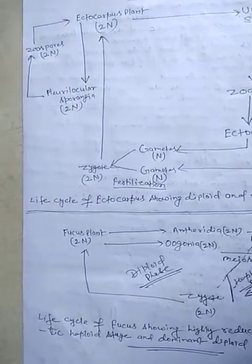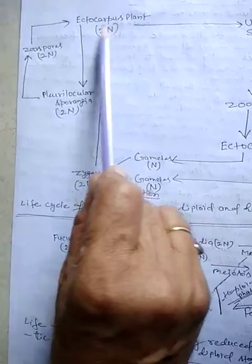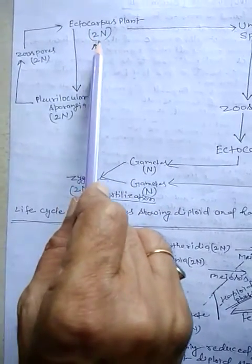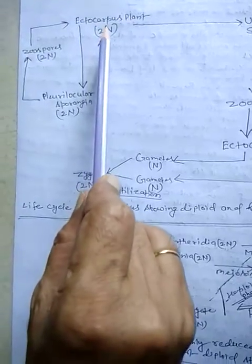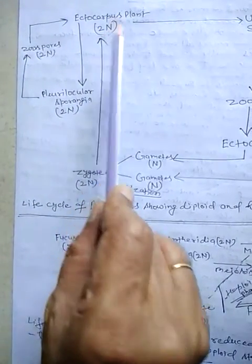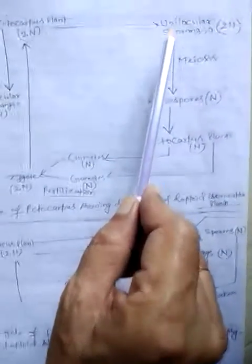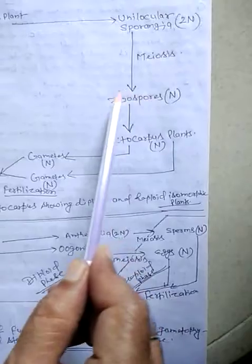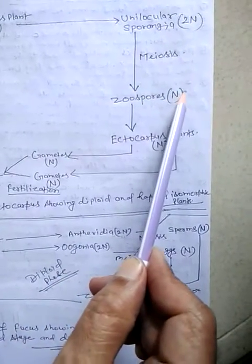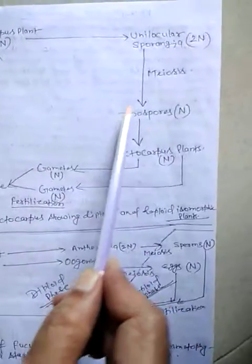Now we can see the life cycle of Ectocarpus. The Ectocarpus plant is the diploid plant — diploid means having two sets of chromosomes. This diploid Ectocarpus plant produces unilocular sporangia, which by meiosis produce zoospores. Since they are produced by meiosis, the zoospores are haploid, having only one set of chromosomes.